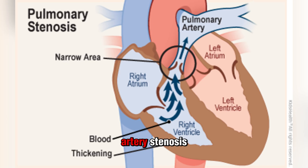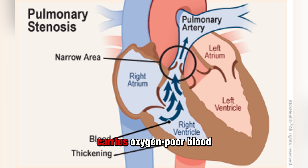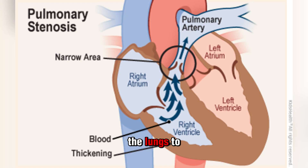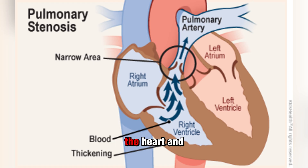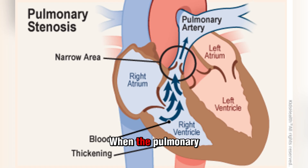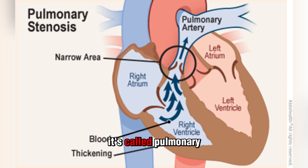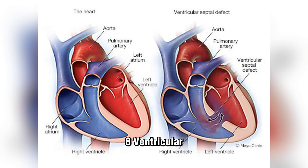7. Pulmonary Artery Stenosis: The pulmonary artery carries oxygen-poor blood from the right side of the heart to the lungs to be oxygenated. The pulmonary valve sits between the right side of the heart and the pulmonary artery. When the pulmonary valve becomes narrowed and doesn't open well, it's called pulmonary artery stenosis.